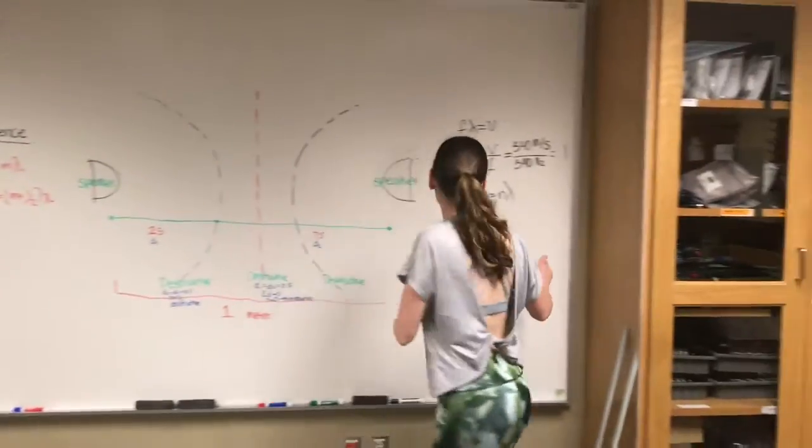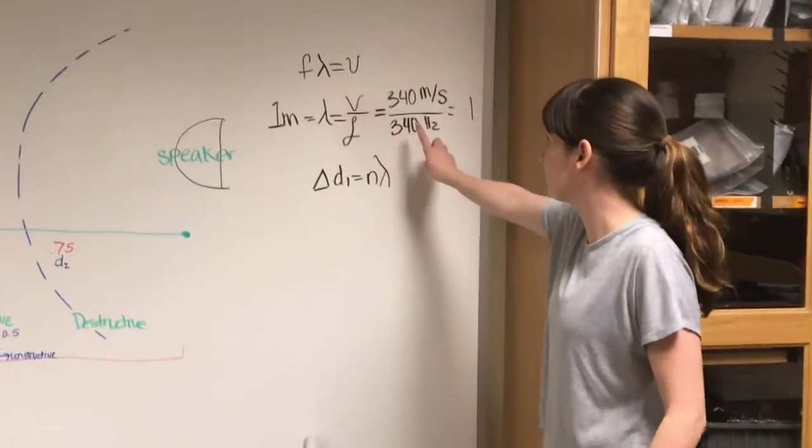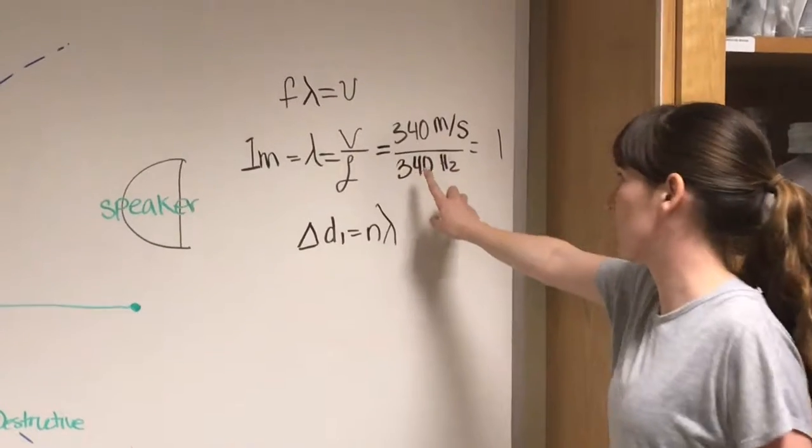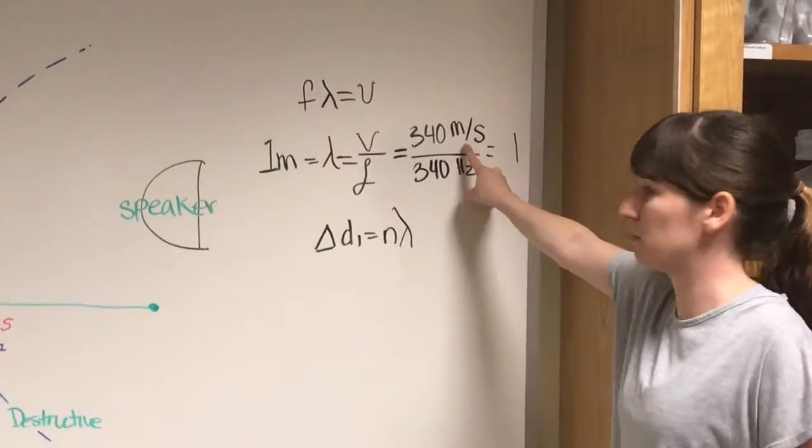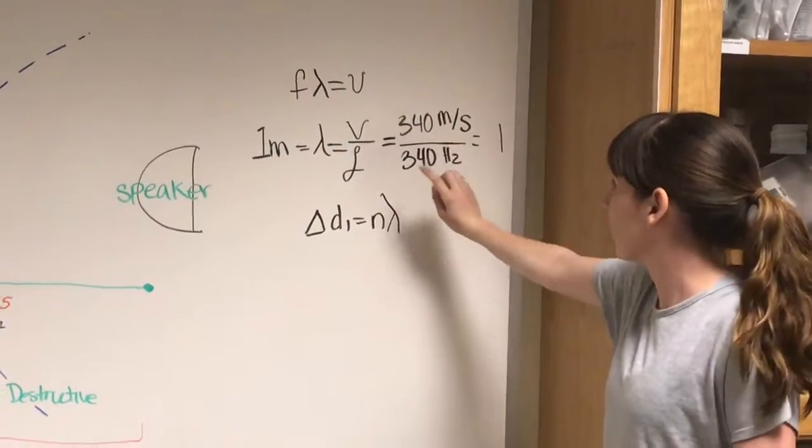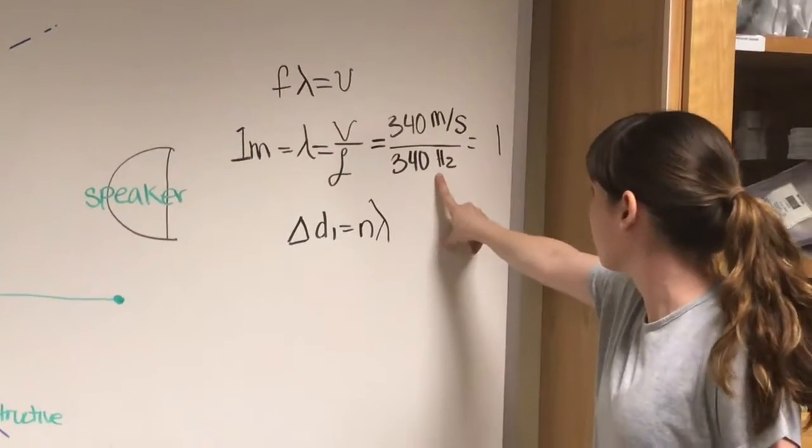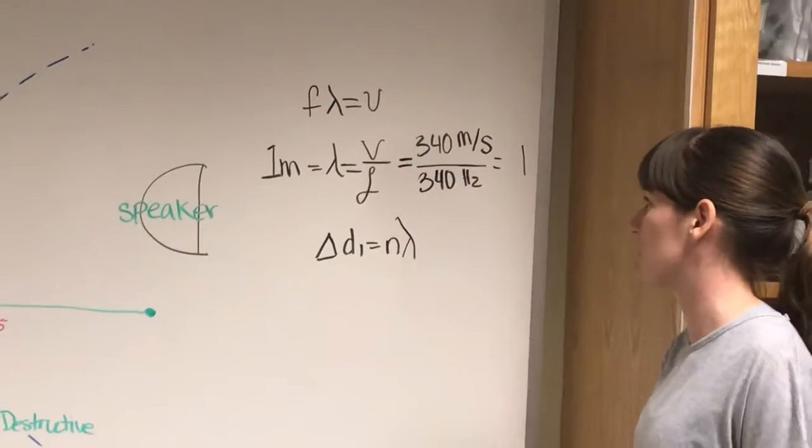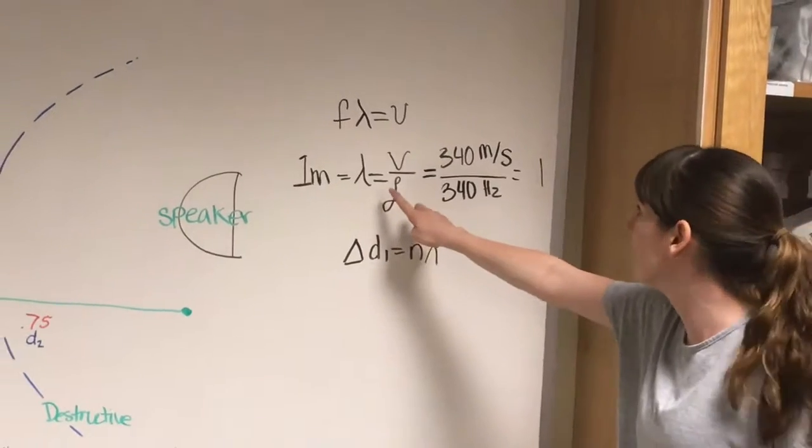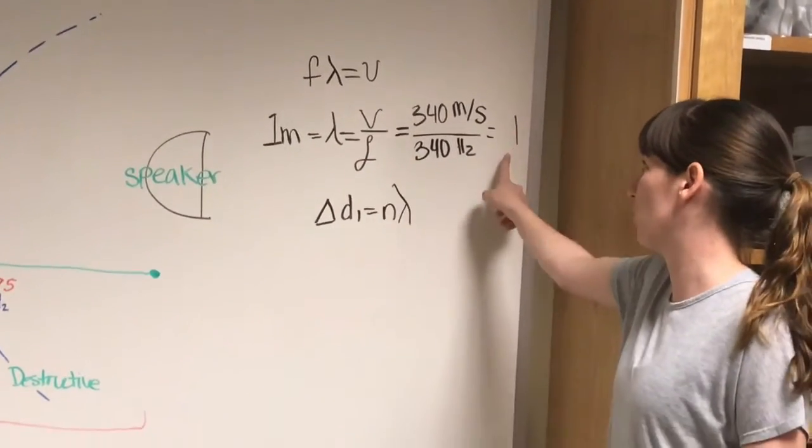And then here is our setup that we used. So we used the typical speed of sound, which is 340 meters per second. And then we have the frequency, which is 340 hertz. And we used that to solve for the wavelength, which we got one.